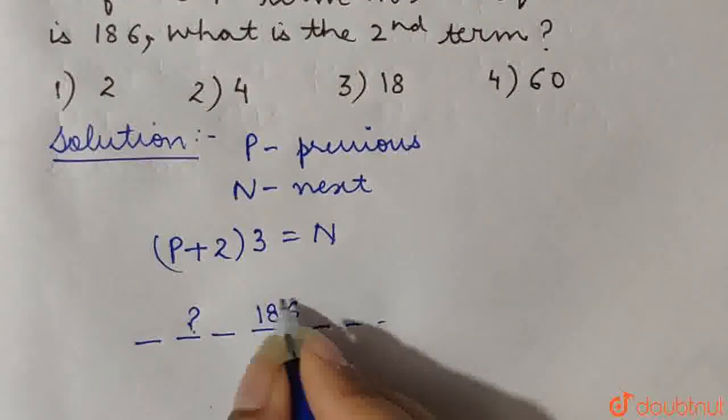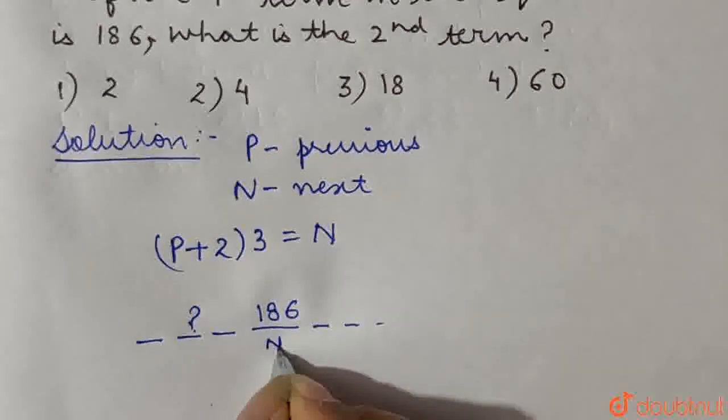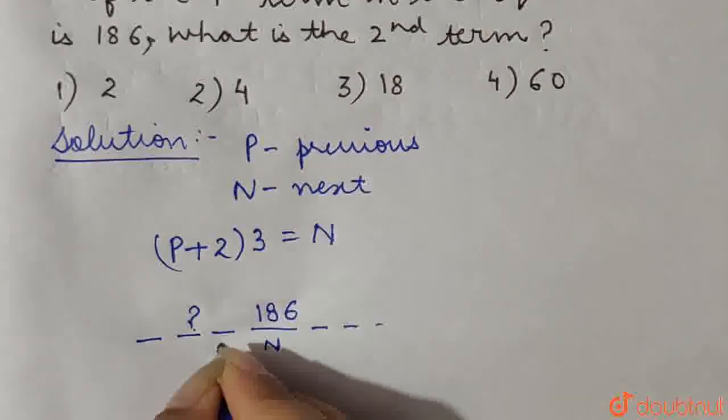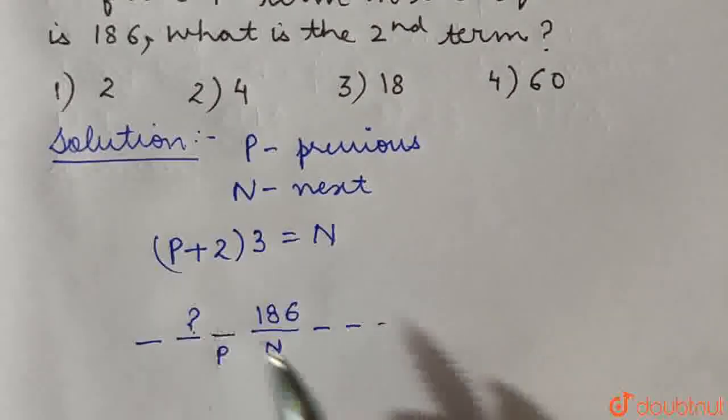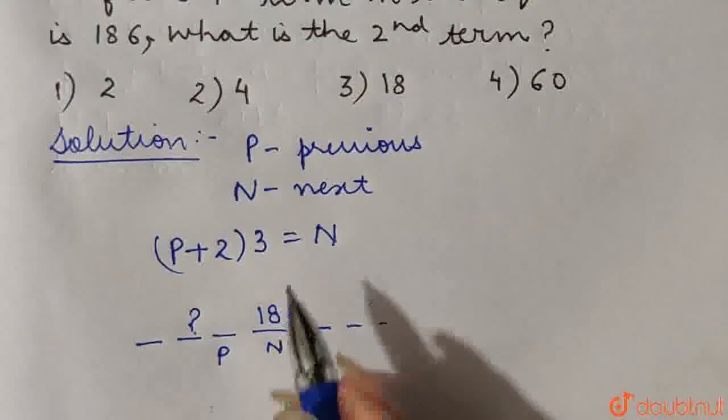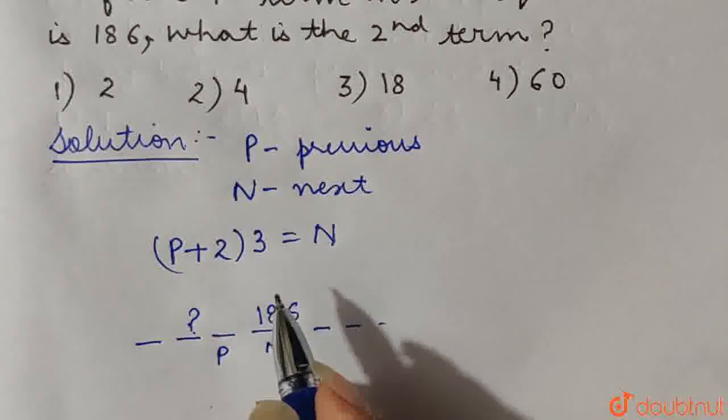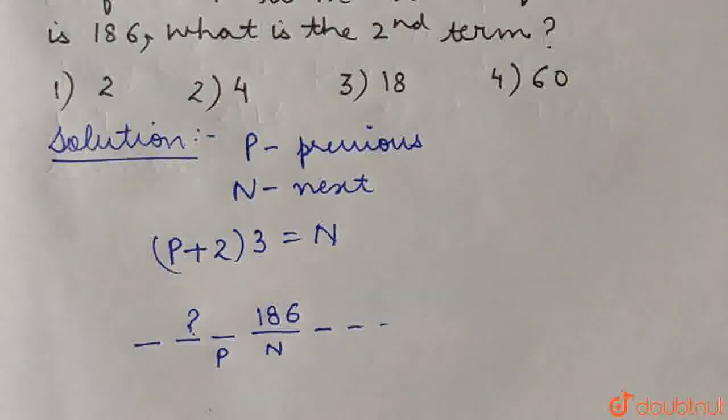So if this term is n, that means the next term, we can calculate the 3rd term using this relation that has been given to us. So if we simplify this, we can use the backward substitution to find out the value of p.